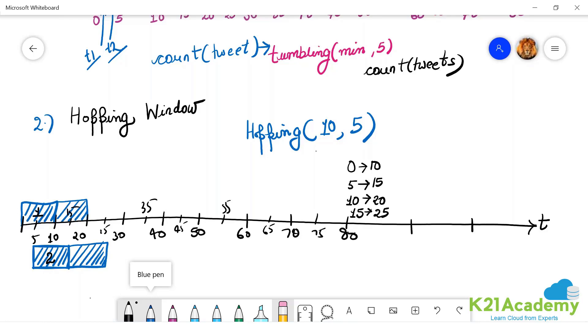Please observe that if the window size and the hop size, if W is equal to H, it is a special case. What is that? If W is equal to H, then it becomes a tumbling window.